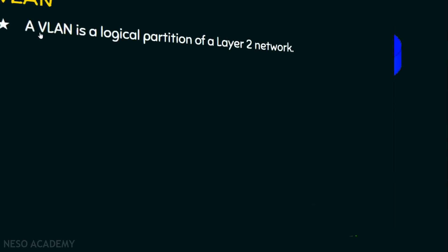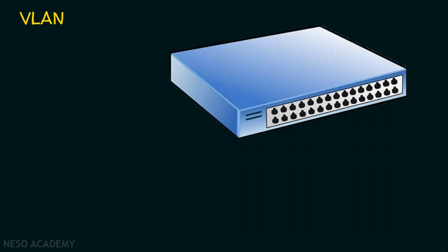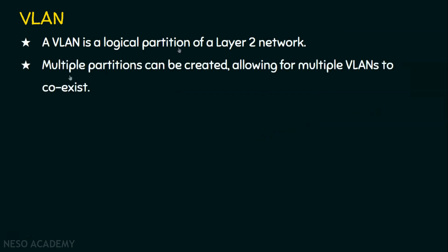A VLAN is a logical partition of a layer 2 network. A switch performs this VLAN activity by creating logical partitions, where some ports belong to one VLAN and others to different VLANs. Multiple partitions can be created, allowing multiple VLANs to coexist — for example, VLAN 1, VLAN 2, and VLAN 3. If no VLAN is created, ports become part of the default VLAN. Each VLAN is a broadcast domain, usually with its own IP network.